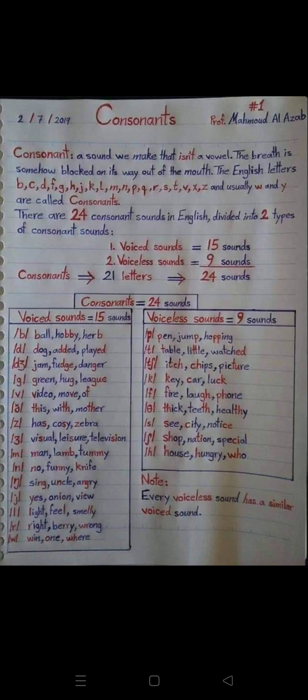There are 24 consonant sounds in English divided into two types: voiced sounds (15) and voiceless sounds (9), totaling 24.